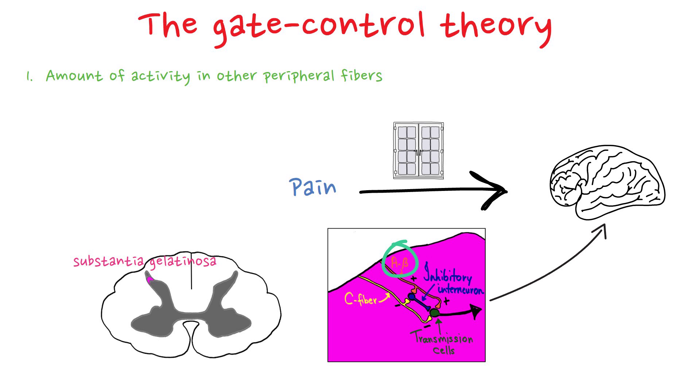They carry information about harmless stimuli or mild irritation, such as touching, rubbing, or lightly scratching the skin. Activity in these A-beta fibers has influence on the inhibitory interneuron, inhibiting the perception of pain when noxious stimulation exists.